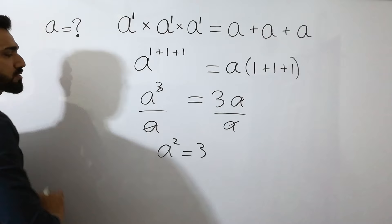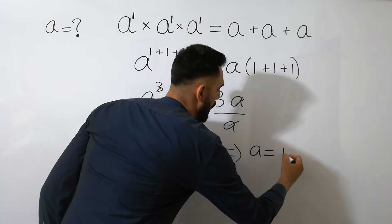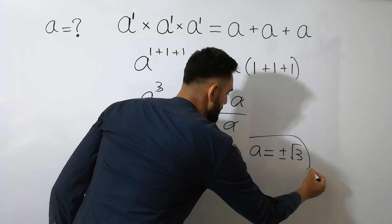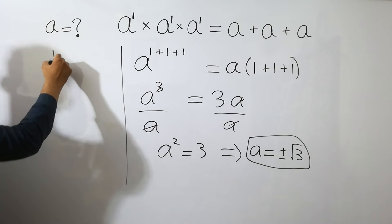By taking square root on both sides, we will get A is equal to plus minus square root of 3. So this is the value of A, let's verify it.